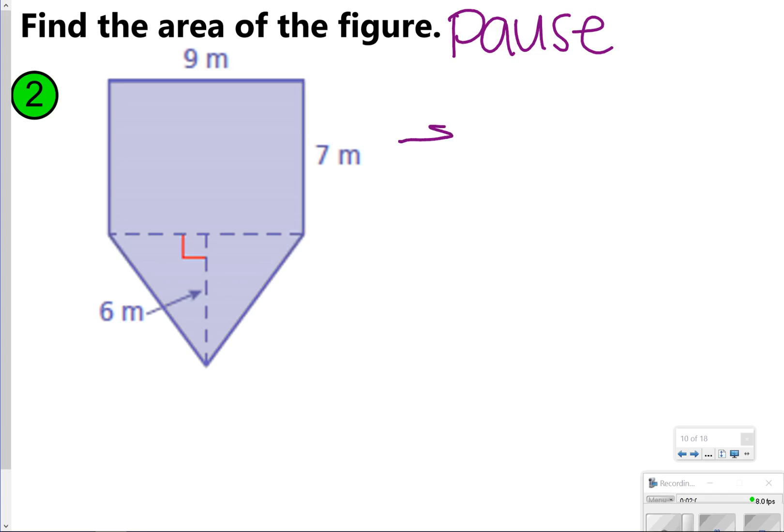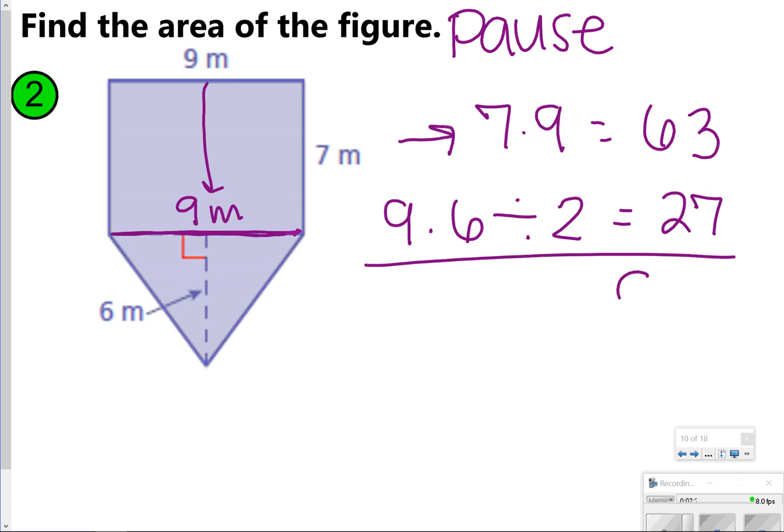All right, so the very first one I did was this rectangle, so I did 7 times 9 to get 63. The other one I used was the triangle. Notice I do need to use this base, which is also the same thing as what's across from it, so 9 meters, so I'm going to do base times height, which is 6, and then divide it by 2. That is going to give me the number of 27, and when I add them together, I'll get 90 meters squared.